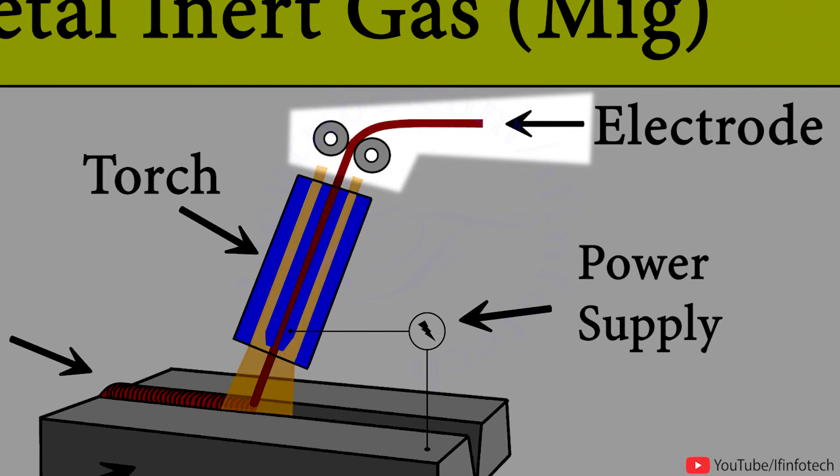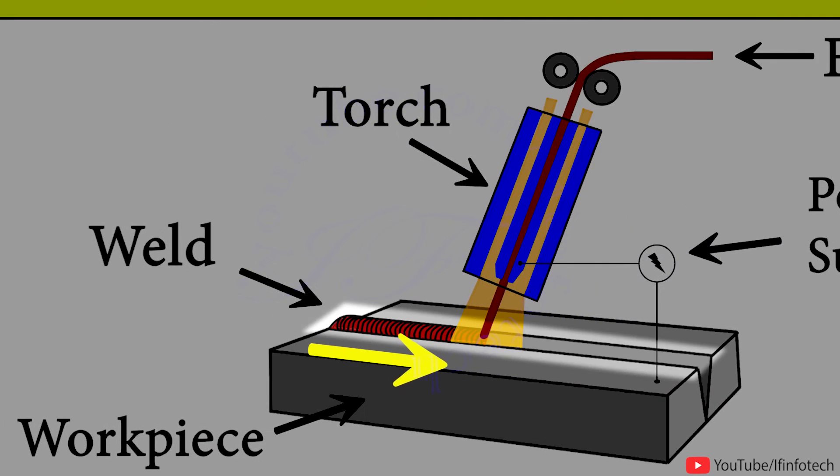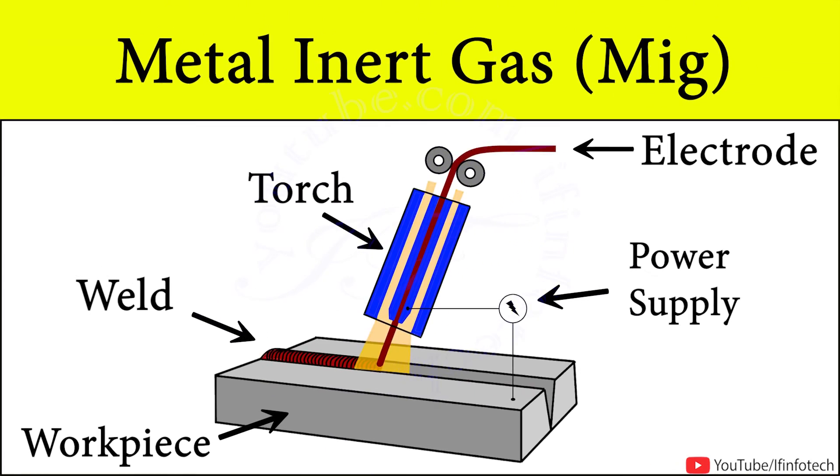The wire is fed from a reel by motor drive and the welder moves the welding torch along the joint line. This process offers high productivity as the wire is continuously fed.